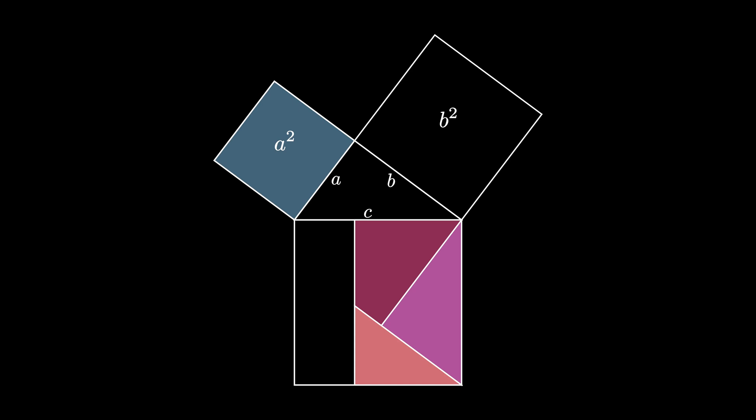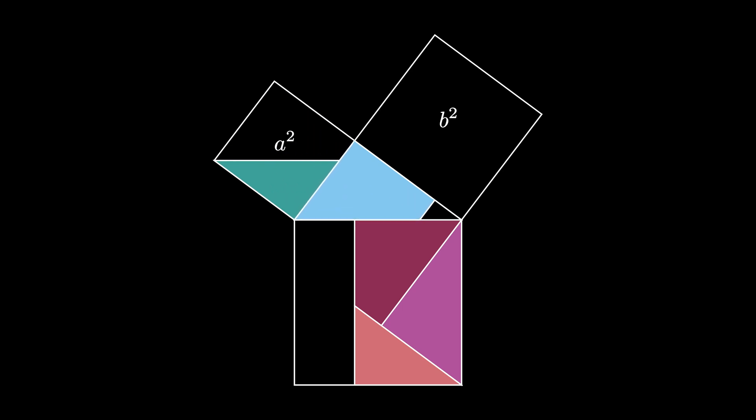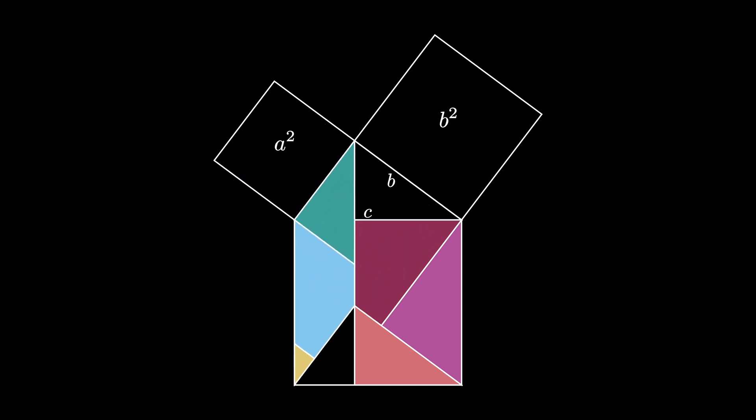We can also cut the A by A square like this, dropping this blue region down into the original triangle, and using the line shown here to cut another little piece to fill the last little triangular region here. We rotate 90 degrees, and use the original triangle to create a new small triangle that then drops down into place in the C by C square.